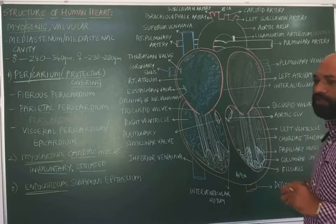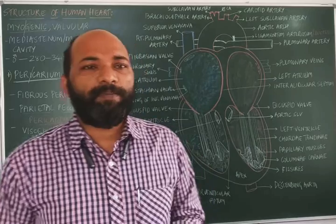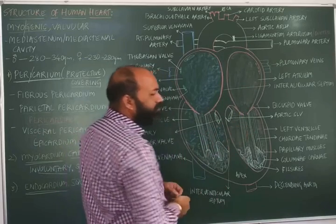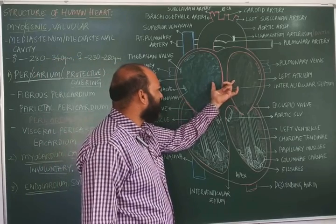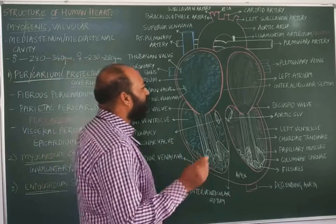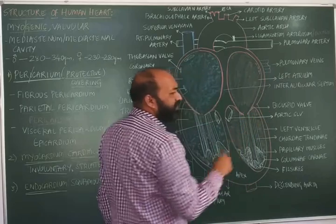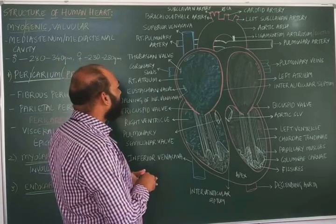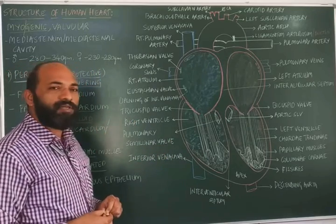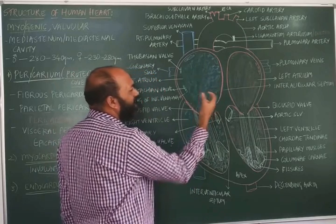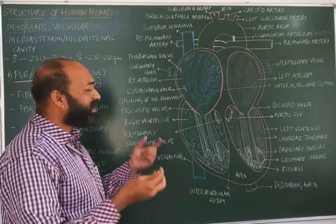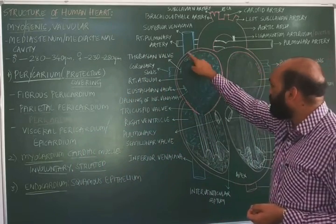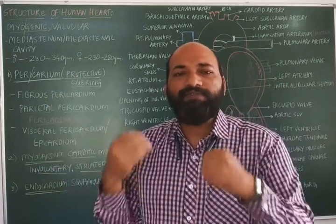The human heart is made up of four chambers: right atrium, left atrium, right ventricle, and left ventricle. The left atrium is responsible for receiving oxygenated blood, whereas the right atrium receives deoxygenated blood. The atria are the receiving chambers, mainly involved in receiving blood — either oxygenated or deoxygenated — from different parts of the body.